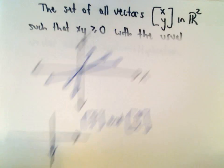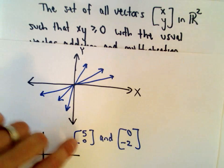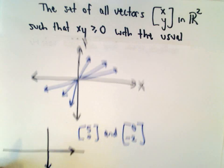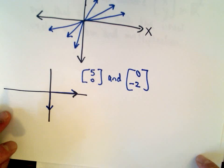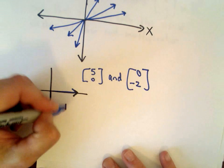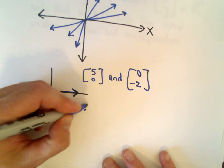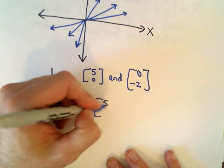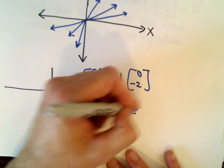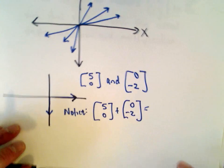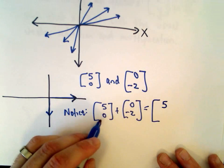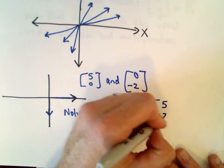So both of those certainly fulfill the requirement, right, if I take the components and multiply them, I get something greater than or equal to 0. But when I do my vector addition, again, we just add these a component at a time, I would get the vector 5 plus 0, which would be 5, 0 plus negative 2, which would be negative 2.